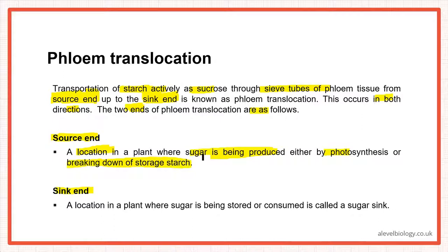The sink end is a location in the plant where sugar is being stored or consumed. If glucose is being produced and has to be stored somewhere, that storage location is the sink end. Or if sugar is being consumed, it's the sugar sink. Remember, source end and sink end are not fixed — depending on the situation they will differ.